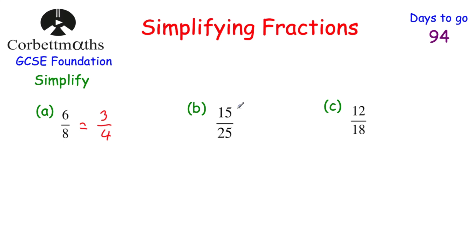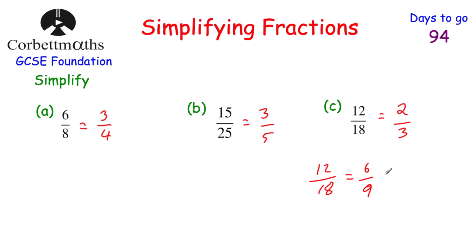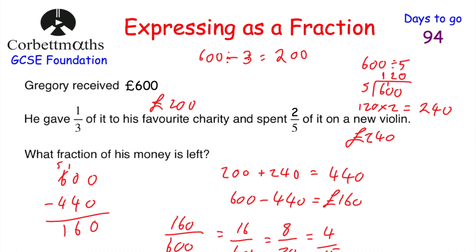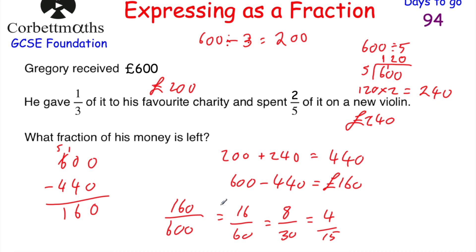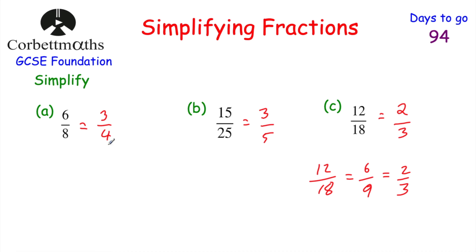Next, 15 twenty-fifths: both divisible by 5. 15 divided by 5 is 3, 25 divided by 5 is 5. So 15 twenty-fifths simplifies to 3 fifths. Then 12 eighteenths: both divisible by 6. 12 divided by 6 is 2, 18 divided by 6 is 3, giving two thirds. You could also halve to get 6 ninths, then divide by 3 to get two thirds — same answer. Results: three quarters, three fifths, two thirds.